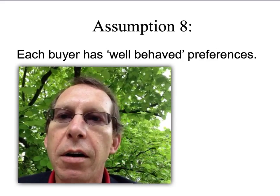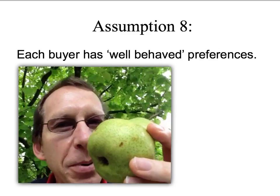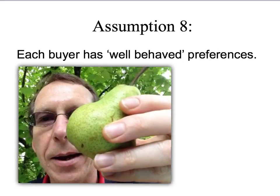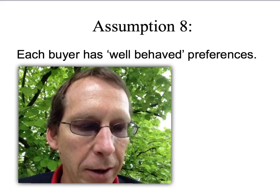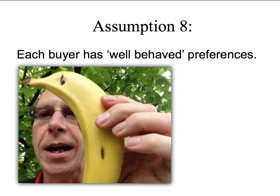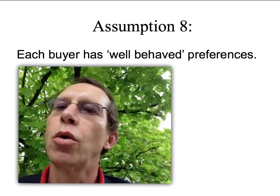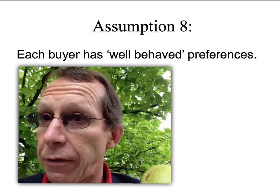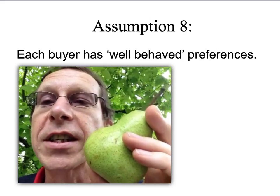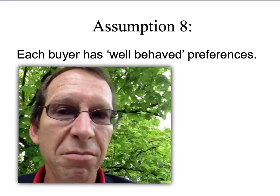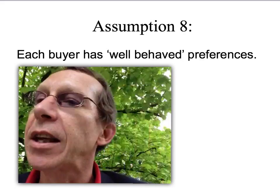You say you weren't going to choose the peach anyway — you were going to choose the banana. Now I make you a different offer: you can choose the apple, the banana, or a pear — not a peach. What would a consistent choice be? Remember, when the offer was apple, peach, and banana, you chose the banana. Now the choice is between apple, pear, and banana. You could still choose the banana — that's consistent. Or you could say, I'll grab the pear, I love pears — that's also a consistent choice.